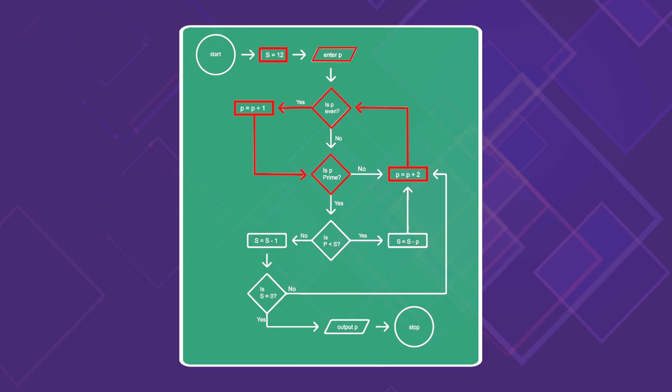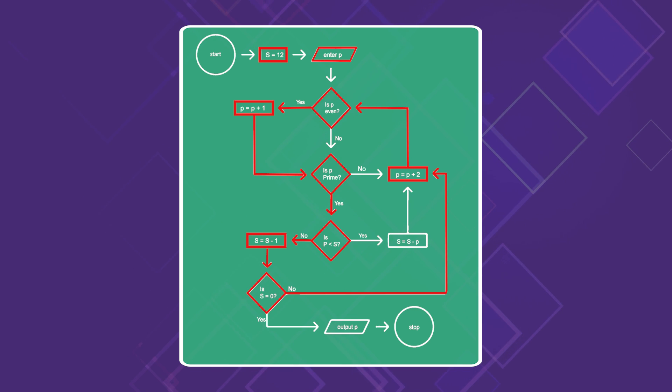What happens when p gets to an odd prime value? Then we move down to the decision diamond, is p less than s? That's a crucial place. Since s only starts at 12 most of the time, the answer will be no. s will decrease by 1, and if it's not 0, then it returns to that same upper loop.